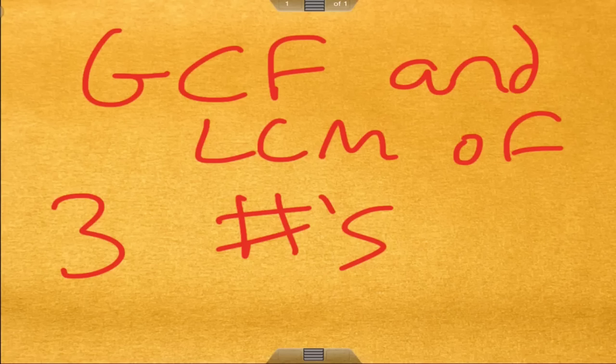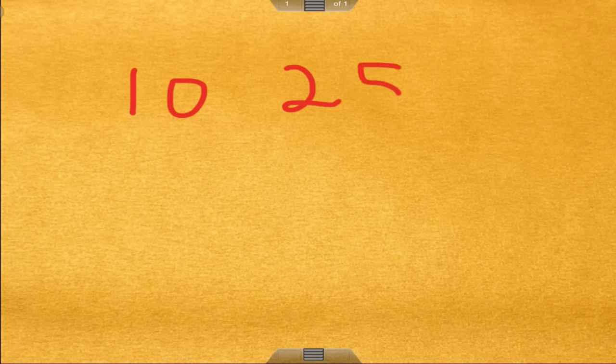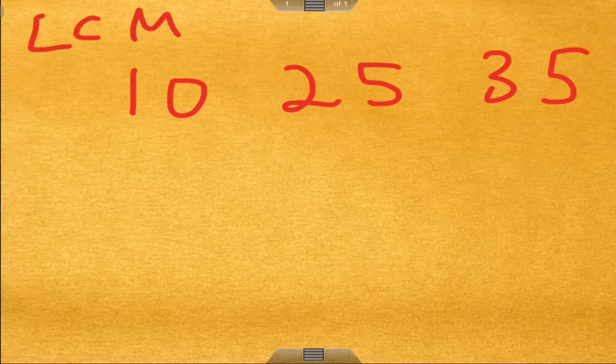We're going to try to figure out the GCF and LCM of three totally different numbers. So let's say we have three numbers like 10, 25, and 35, and you want to find the LCM, the least common multiple of all three.